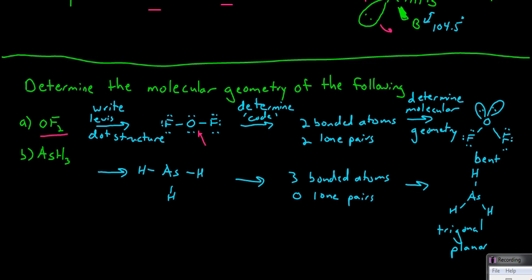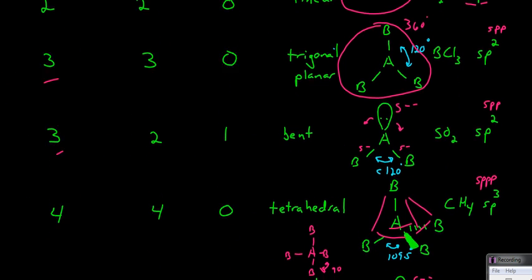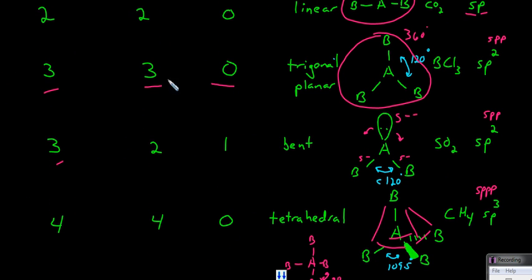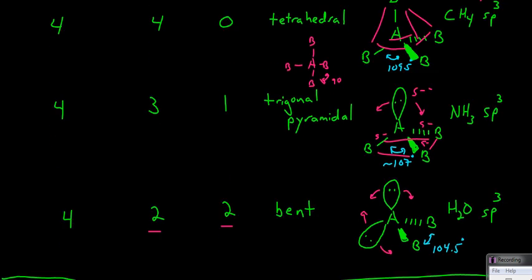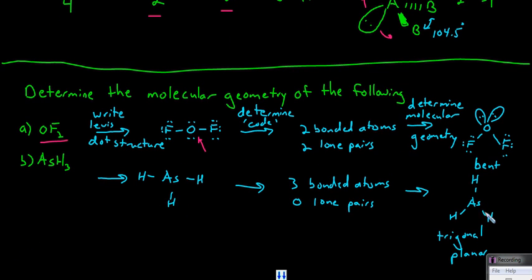In another case, arsenic trihydride — draw the Lewis dot structure again. We see that we have three bonded atoms on the central atom and zero lone pairs. Three bonded atoms, zero lone pairs — that's a trigonal planar geometry, about a 120 degree bond angle around the central atom. So we rearrange this Lewis dot structure into this molecular geometry. Thanks for watching.